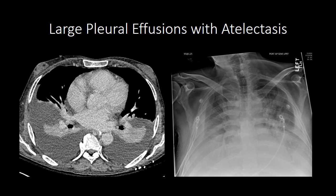Here is the chest CT from the same patient. You can see these large pleural effusions, and then the completely collapsed lower lobes almost floating out in the effusions. You can imagine why the combination of both the fluid and the collapsed lung without gas causes very dense opacification of the lung bases.